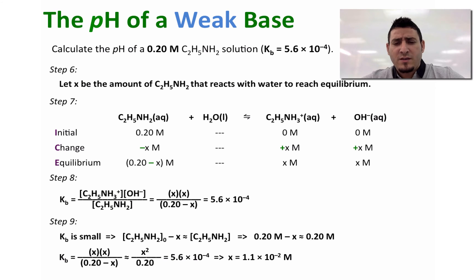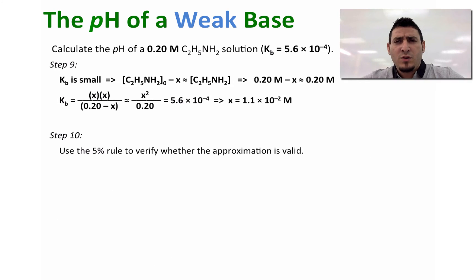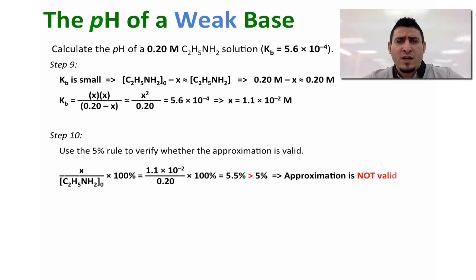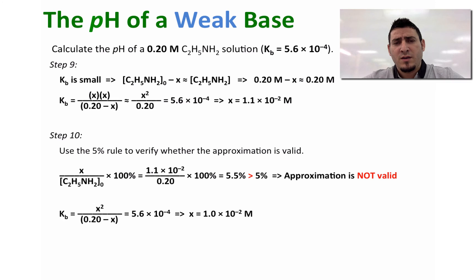Calculating X, we find X is equal to 1.1 times 10 to the power minus 2. Before proceeding, we have to check whether our approximation is valid. In step ten, we use the 5% rule to verify our approximation. We divide the value of X by the initial concentration of the base, and the answer is 5.5%, which is greater than 5%. Since the answer is greater than 5%, our approximation is not valid and we cannot neglect X. We have to replug X into the expression of Kb, and using a calculator, X is equal to 1.0 times 10 to the power minus 2.